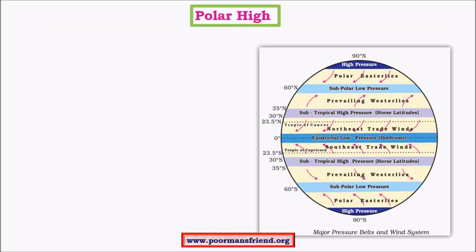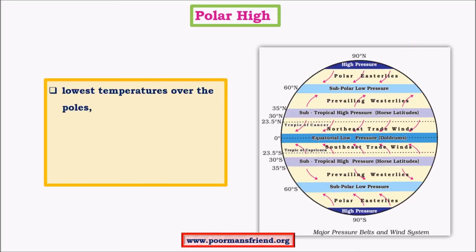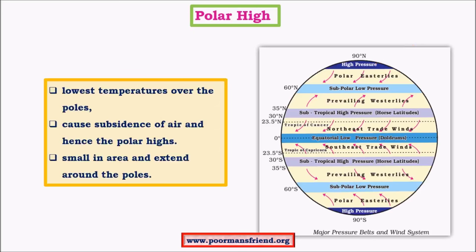Moving on to polar highs: at the poles, temperature is very low, causing increased air density in the upper levels of the atmosphere. In the upper troposphere, dense cold air is forced to the ground, creating low pressure at upper levels and high pressure at the bottom levels — this bottom high pressure is called the polar high. This is a thermally driven belt: very low polar temperatures cause subsidence of air, forming polar highs. Due to thermal factors, we have two such belts — equatorial low and polar highs.